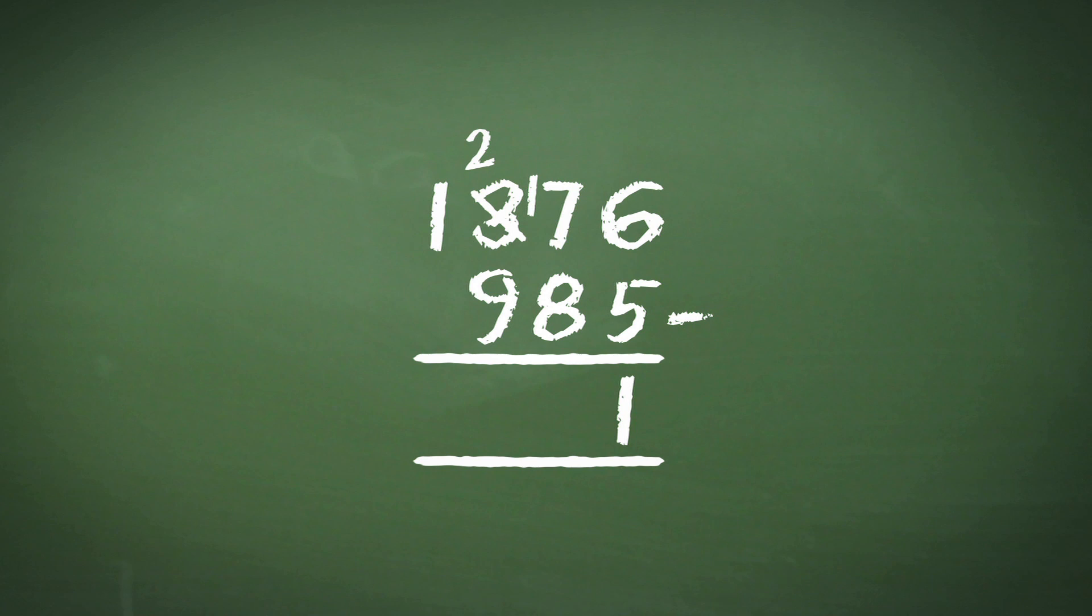We can now take the 8 from 17, which gives us 9. We now have the same problem with 2 minus 9, so again we take 1 from the next column, to give us 12,